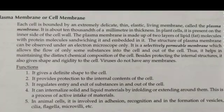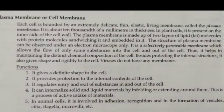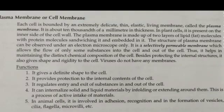In animal cells, the plasma membrane is involved in cell recognition and in the formation of vesicles — a structure we study in relation to the Golgi bodies. It also helps in the formation of cilia, which are thread-like structures present on bacterial cells, and flagella, present in organisms like Chlorella and different bacteria. Microvilli, the finger-like projections in the small intestine that aid absorption, are also formed by the plasma membrane.